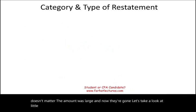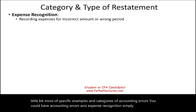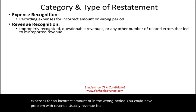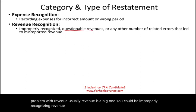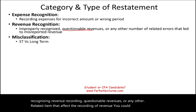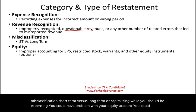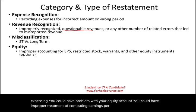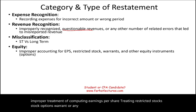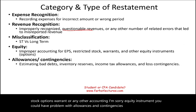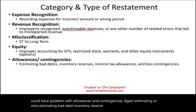More specific categories of accounting errors include: expense recognition — recording expenses for an incorrect amount or in the wrong period; revenue errors — improperly recognizing or recording questionable revenues; misclassification — short-term versus long-term, or capitalizing when you should be expensing; equity account problems — improper treatment of earnings per share, restricted stocks, stock options, warrants, or other equity instruments; and allowances and contingencies — misestimating bad debt, inventory reserves, income tax allowances, or loss contingencies.